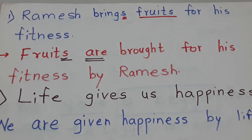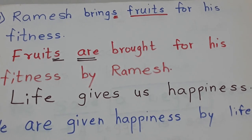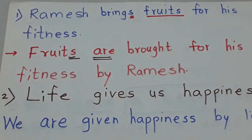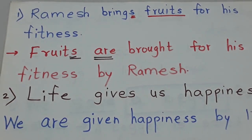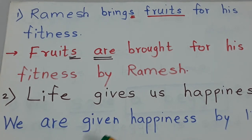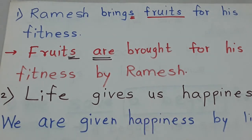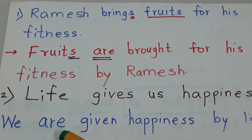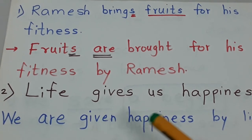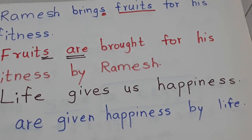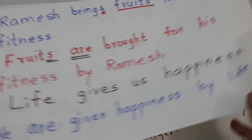Next sentence: Life gives us happiness. Life gives us joy. Now gives is the verb. Give, gave, given are its three forms. Now us is here. So us at the start becomes we. We takes are. We are given happiness by life. In present tense, let's see now in past tense.